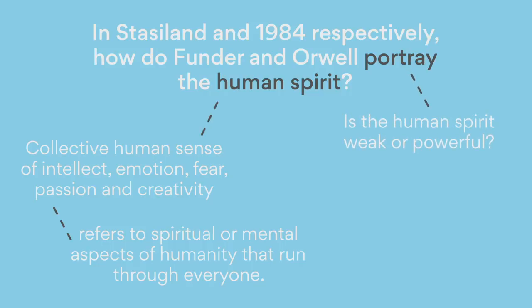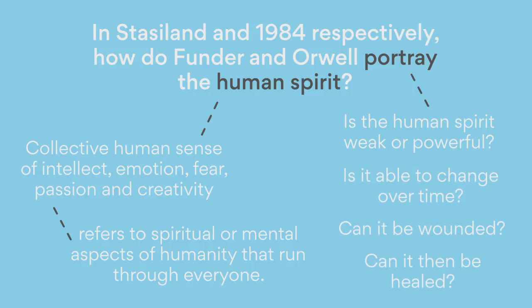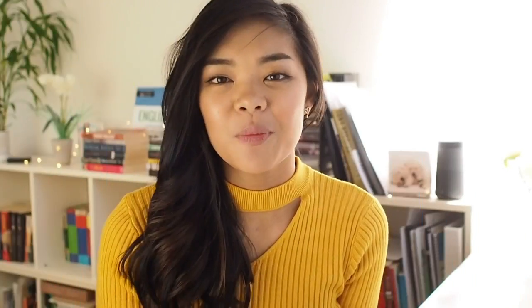The topic wants us to consider how the authors actually represent human fears, emotions, passions, and so forth. You might want to ask: is the human spirit weak or powerful? Is it able to change over time? Can it be wounded? Can it be healed? And then the next step is to ask how you manage to answer those questions. What textual clues gave you those ideas? Those textual clues are the things you want to explore in this essay. Any prompt that asks how authors portray or explore ideas should follow a similar thought process.